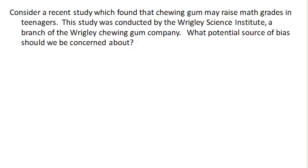Consider a recent study which found that chewing gum may help raise math grades in teenagers. This study was conducted by the Wrigley Science Institute, a branch of the Wrigley Chewing Gum Company. What potential source of bias should we be concerned about here? You're probably jumping on the fact right away that this is saying gum is good, from a study done by a gum company.